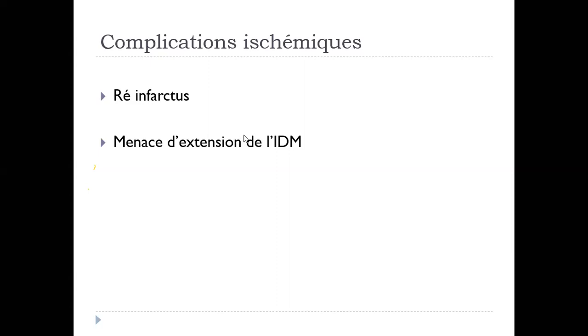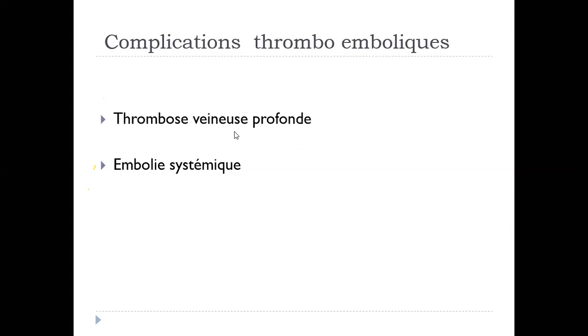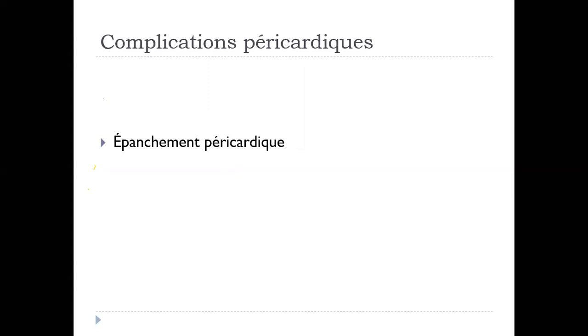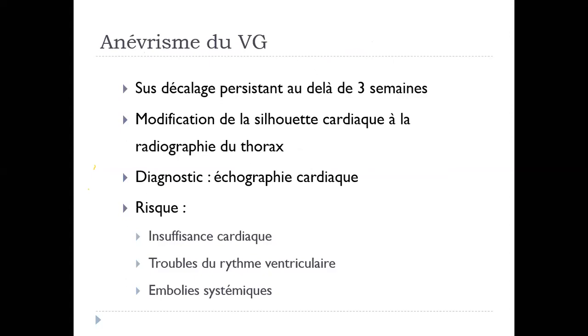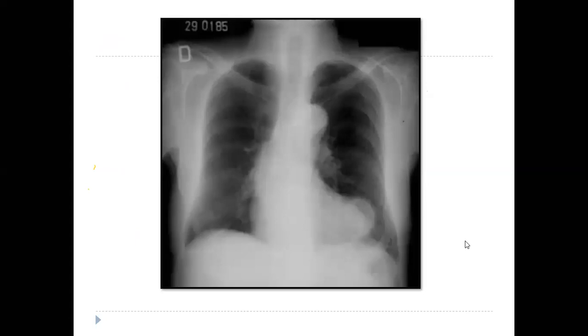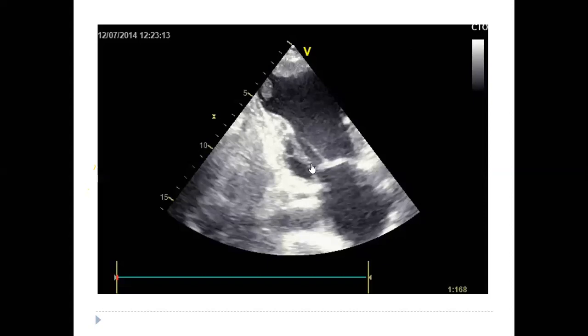Des complications systémiques : on peut avoir des réinfarctus et des menaces de l'intensité, des complications thrombo-emboliques, thrombose génèse et embolies systémiques, complication péricardique. On va passer aux complications tardives : l'anévrisme du VG. L'anévrisme du VG est suspecté à chaque fois qu'on a un sus-décalage persistant du segment ST au-delà de 3 semaines. Le diagnostic c'est l'échographie. Le risque : insuffisance cardiaque, trouble du rythme et formation de thrombus avec embolies systémiques.